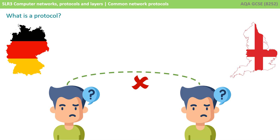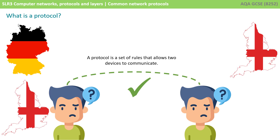So first let's look at what a protocol actually is. On the left we have someone speaking German and on the right we have someone speaking English. These are the only languages these two people know, so when they try to communicate they are unable to do so. What if the person on the left was bilingual? They can speak German and they can speak English. They now share a common language and so the two people can communicate. This is the principle of a protocol: a set of rules that allow two devices to communicate in some way.